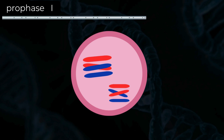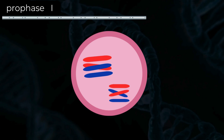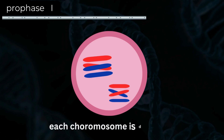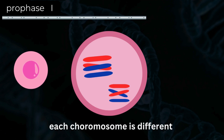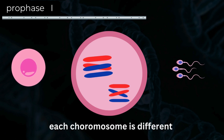In fact, that's the whole point of sexual reproduction — to increase genetic variability. Each chromatid is now different, and as each one will end up in a separate gamete, it means each sex cell is genetically different from all others. This explains why brothers and sisters are different despite having the same parents. Only identical twins have the same genetic makeup, as they both originated from the exact same egg and sperm.